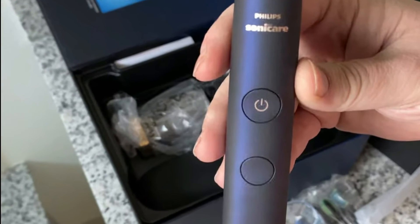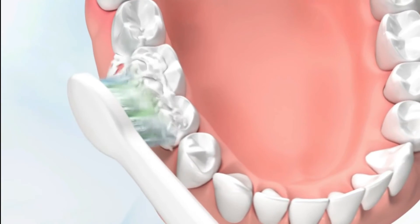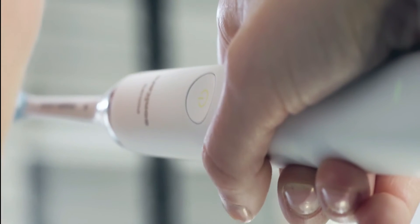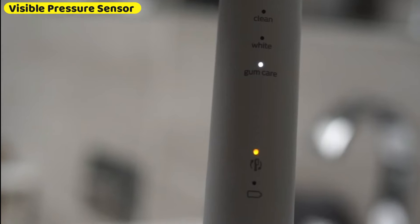The Philips Sonicare Diamond Clean Smart goes above and beyond ordinary cleaning to remove up to 10x more plaque. Removes 100% more stains in only three days and improves gum health up to 7x faster. It also has a visible pressure sensor that will inform you if you are brushing too aggressively.